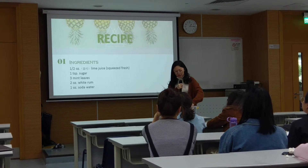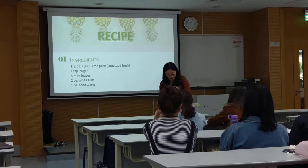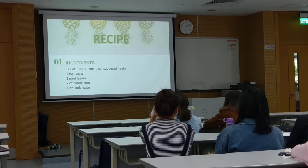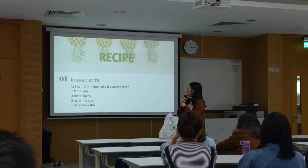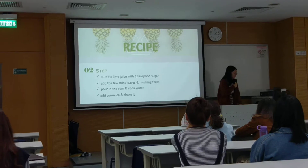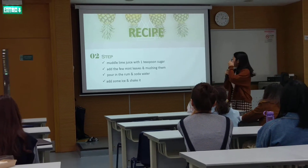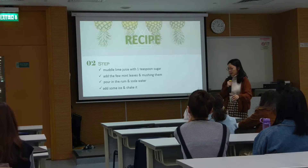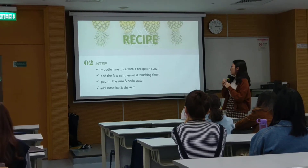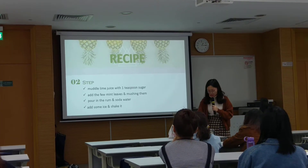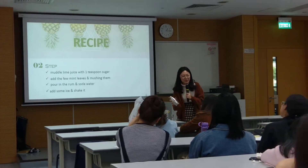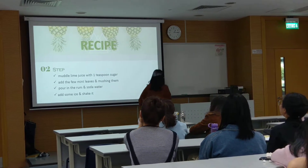You also need two ounces of rum — this is one ounce — and one ounce of soda water. The steps are: muddle the lime juice with one teaspoon of sugar in a shaker, add a few mint leaves and mash them in, then pour in the rum and the soda water, add ice, and shake it. It's really easy!